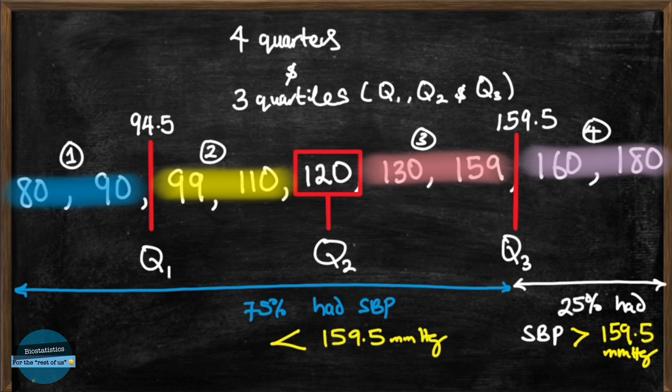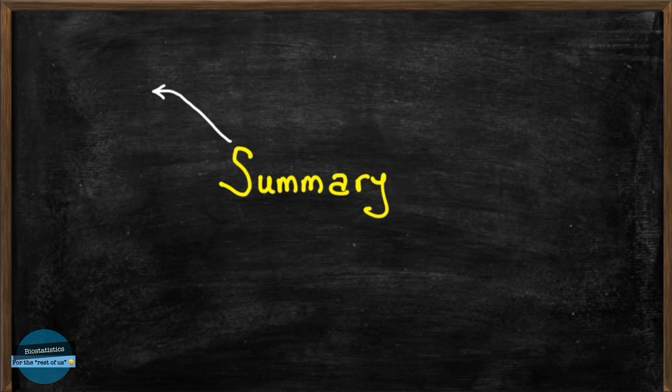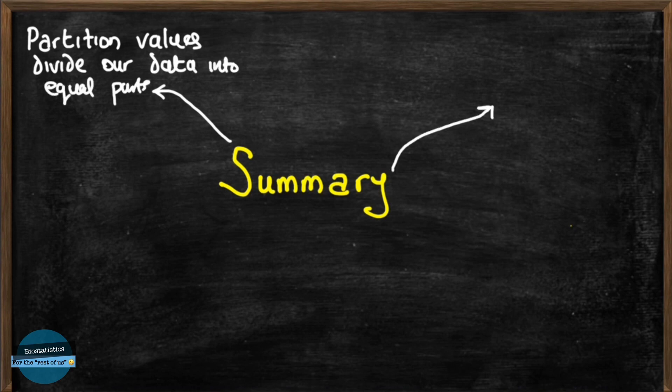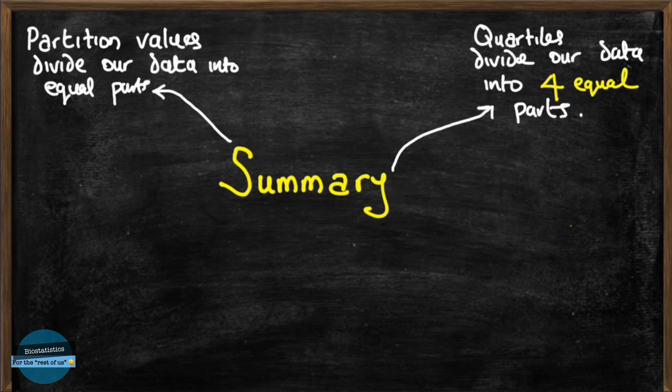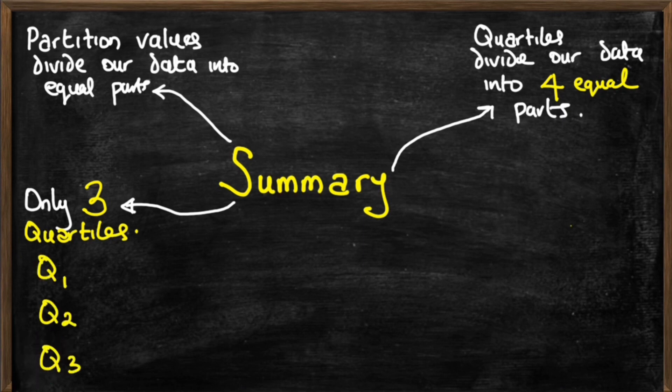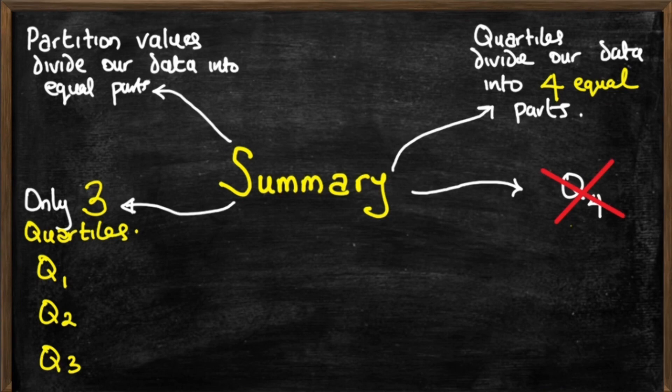Now knowing these quartiles helps us to know the distribution of the data and can help us to make more informed decisions. And in summary, partition values helps us to divide our data set into equal parts so that we can understand the distribution of the data. Quartiles help to divide the data into four equal parts. Those are four quarters. There are only three quartiles, Q1, Q2, and Q3. Not four quartiles. There is no such thing as Q4.